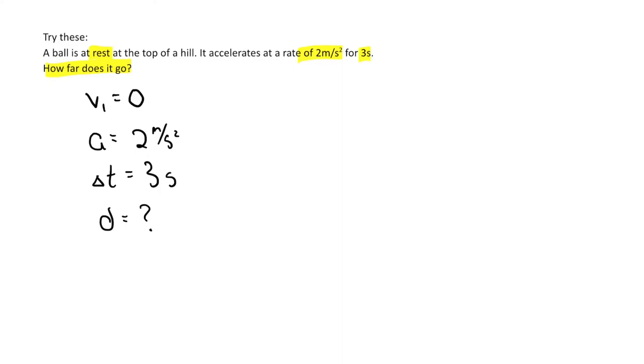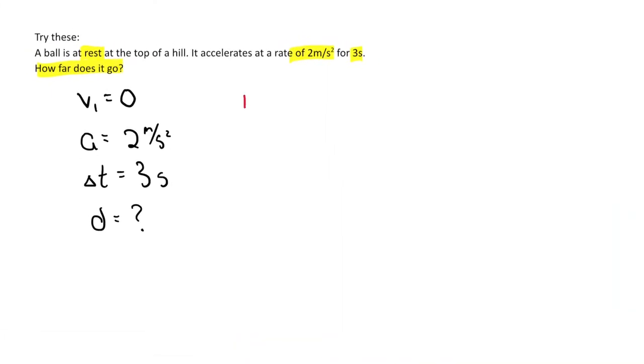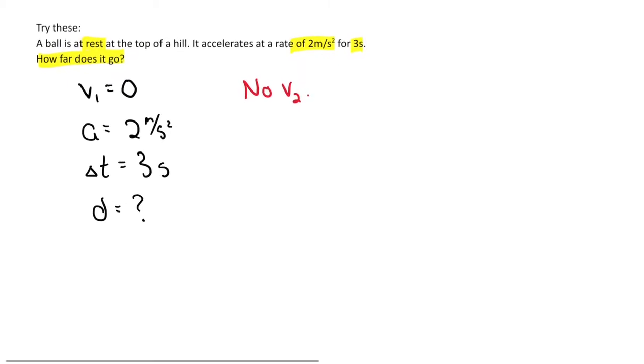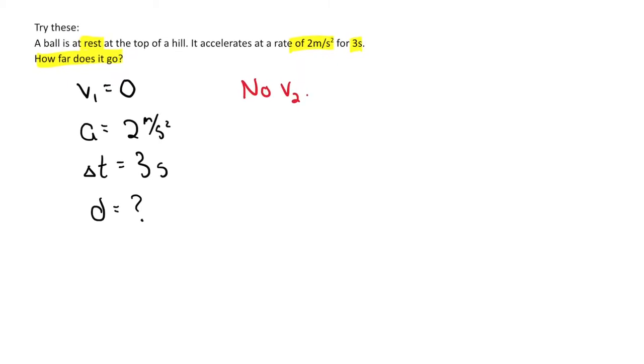If we take a look at that, as I first go through I would look for what's missing. There's no v2. Not that it didn't have a second speed, I just don't care about the second speed. I know what started from rest, I know its acceleration, I know the time, I want to know how far. I just don't care about how fast it's going at the end in this case.